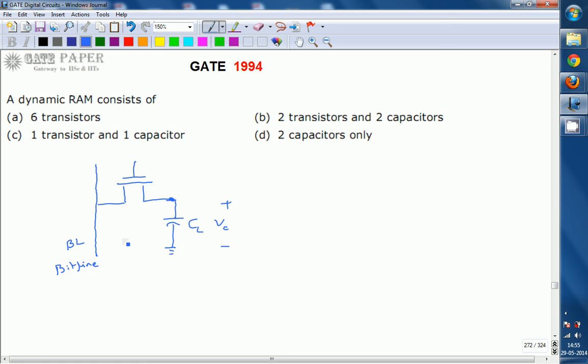Whether it has to be stored or not is decided by the word line. This is WL, called the word line. The word line decides whether the information present is going to be loaded into CL or not.